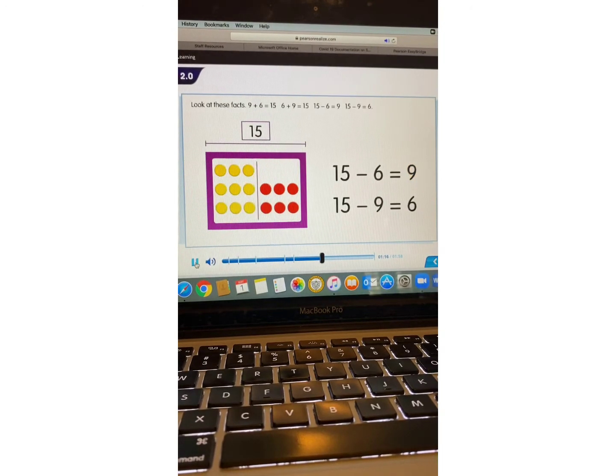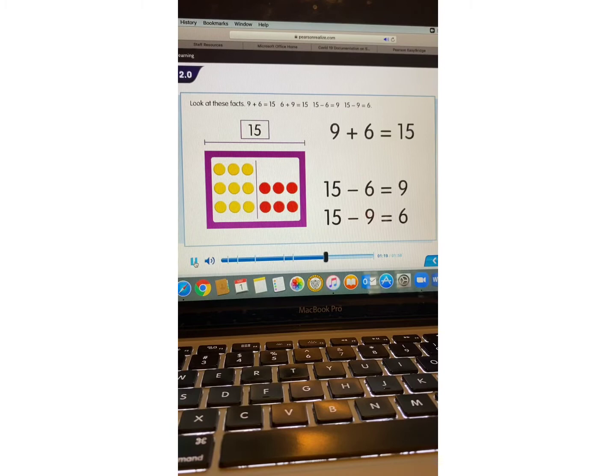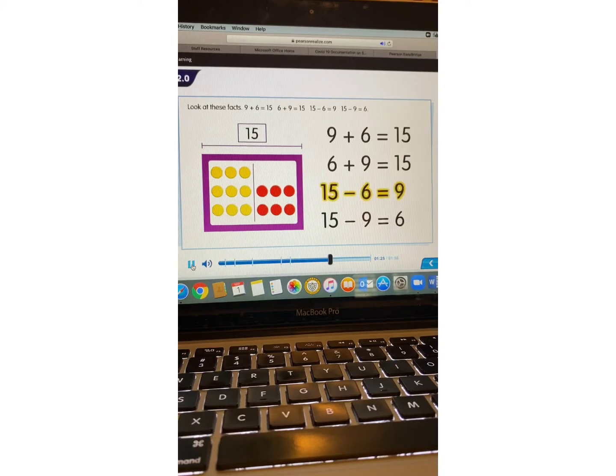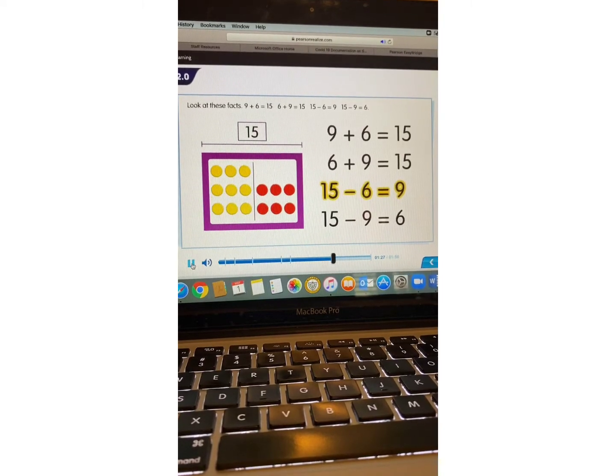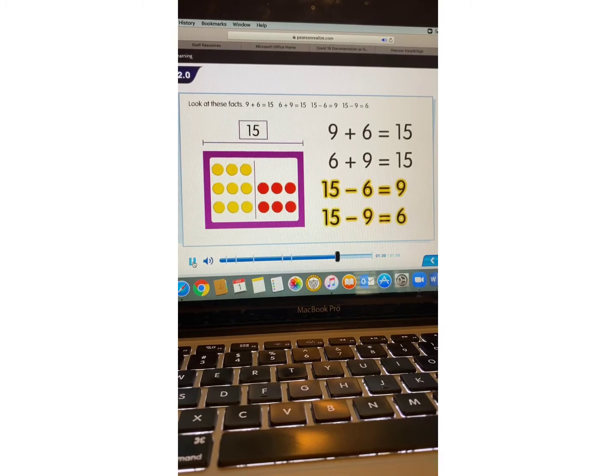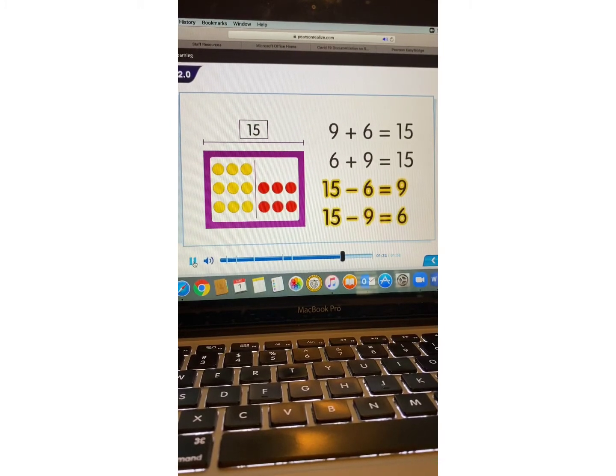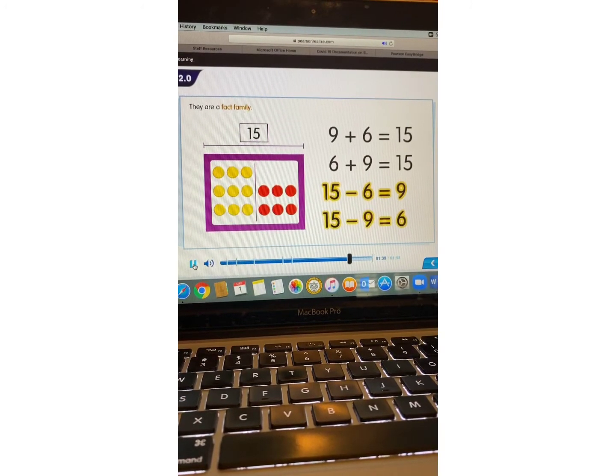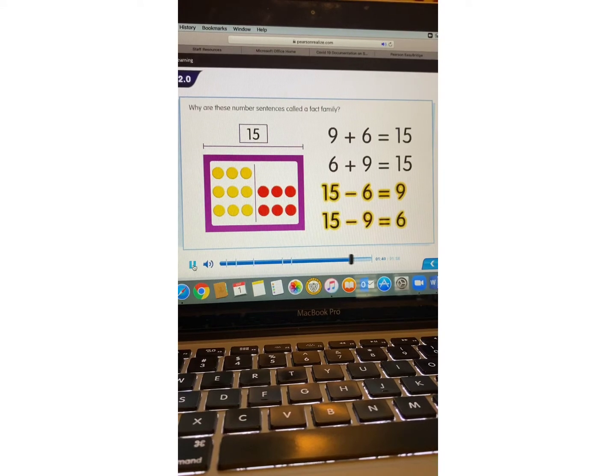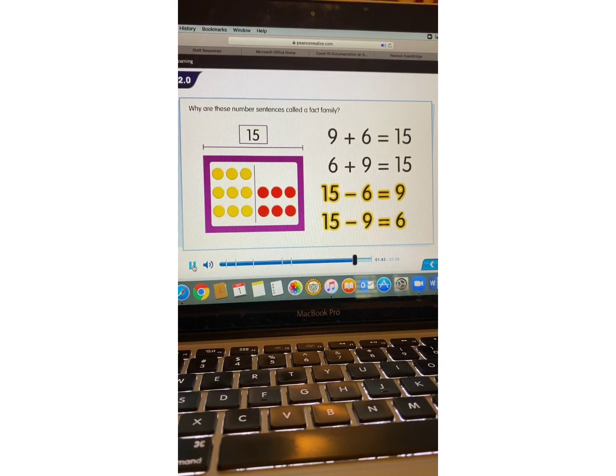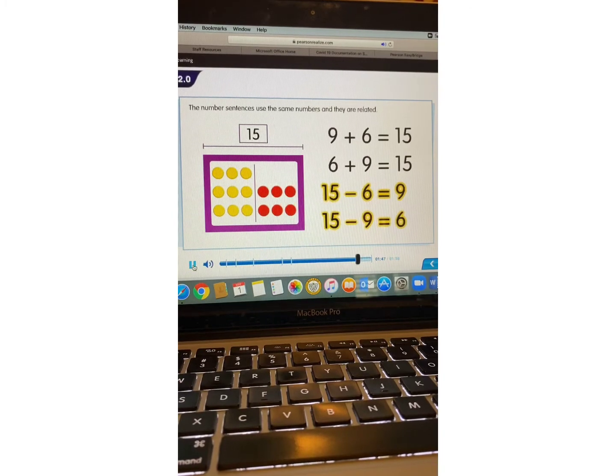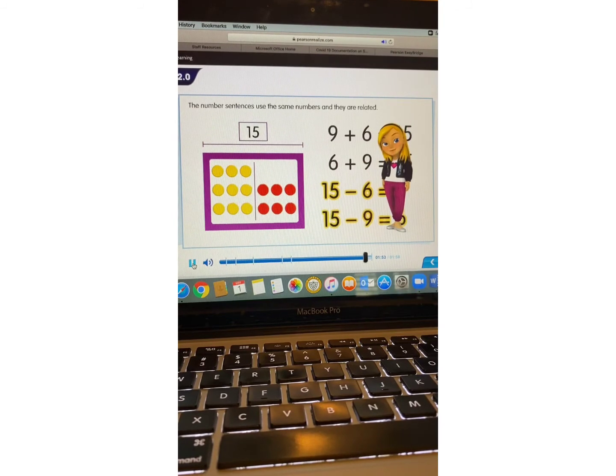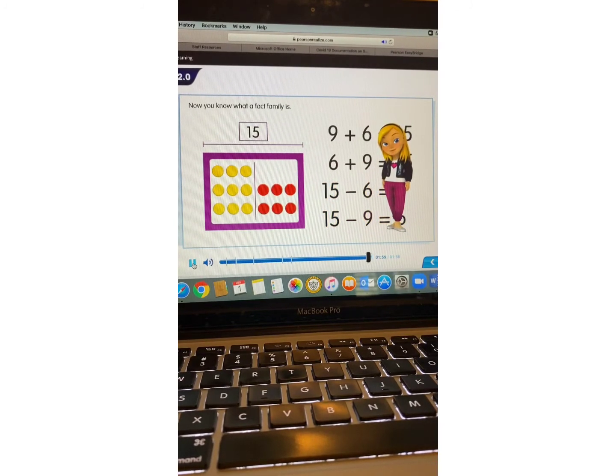Look at these facts. 9 plus 6 equals 15. 6 plus 9 equals 15. 15 minus 6 equals 9. And 15 minus 9 equals 6. These facts are related. They are a fact family. Why are these number sentences called a fact family? The number sentences use the same numbers and they are related. Now you know what a fact family is.